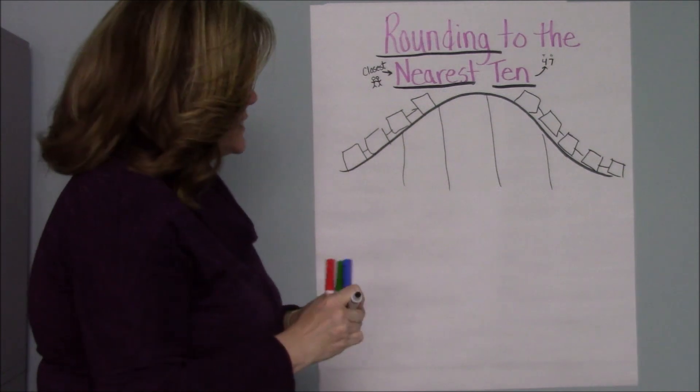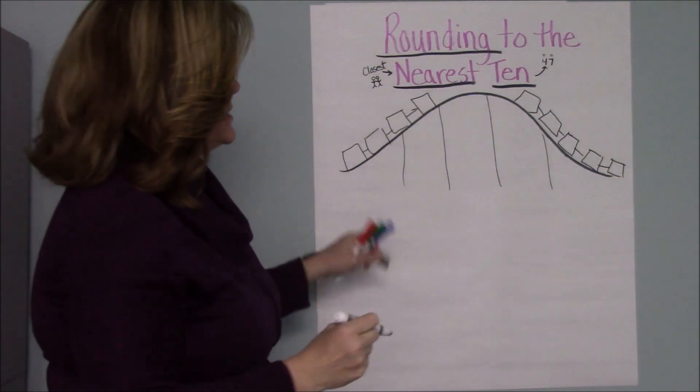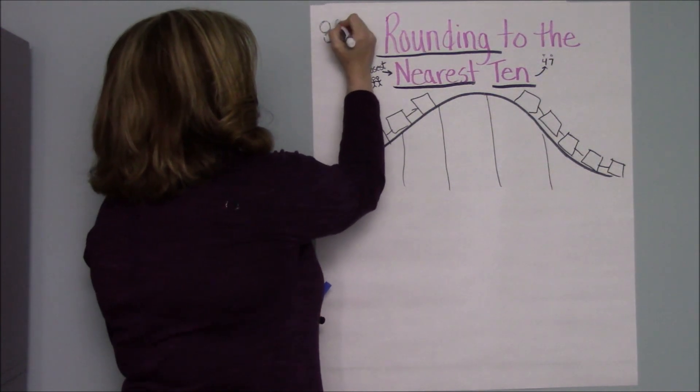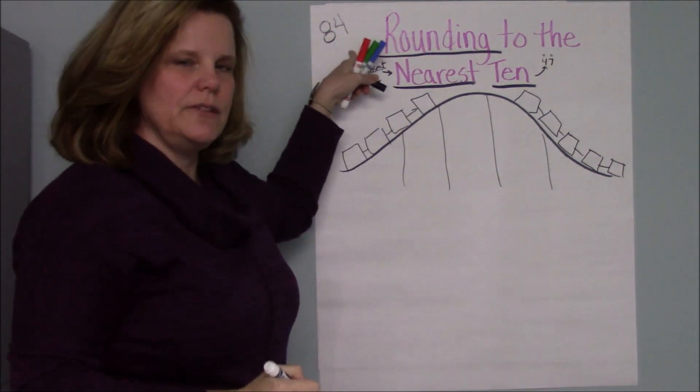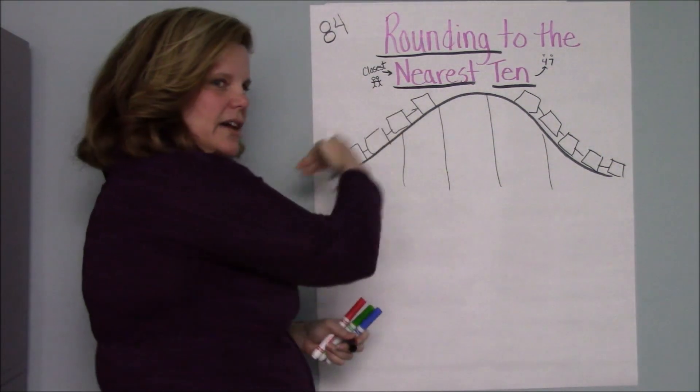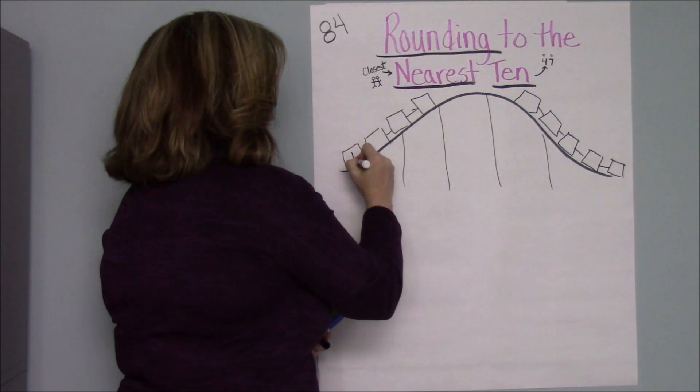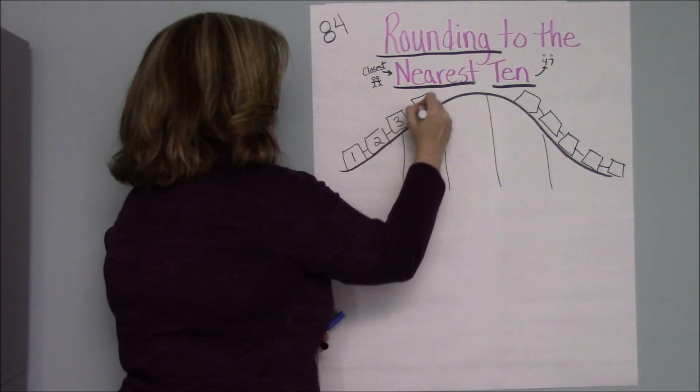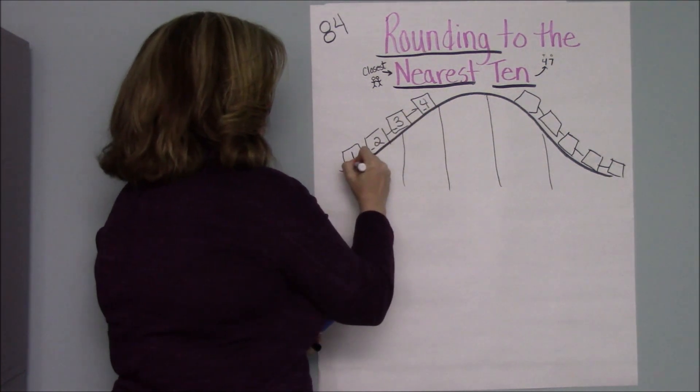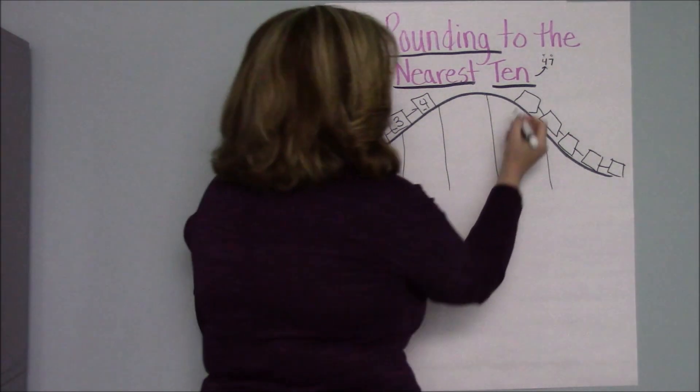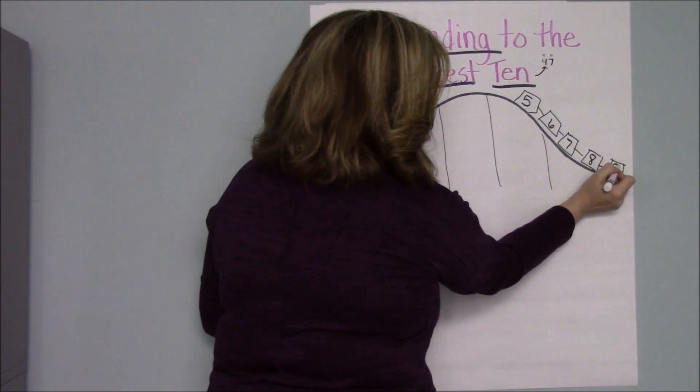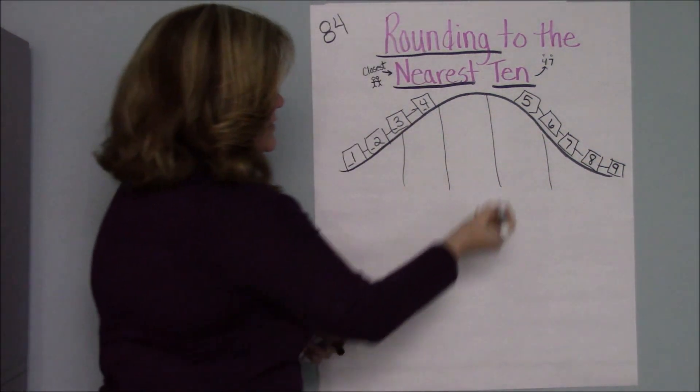And then we'll have another trail of carts going down the hill on this side. When we are rounding numbers we want to take our first example. Let's say 84. We want to round 84 to the nearest ten. So we have to place it on our roller coaster. On the down side of the roller coaster are numbers that have one, two, three, or four. On this side of the roller coaster we have numbers five, six, seven, eight, nine.